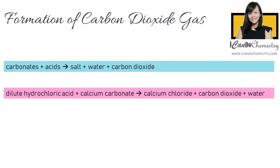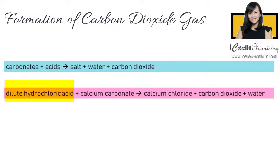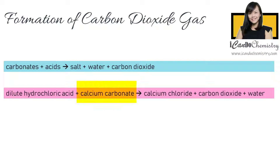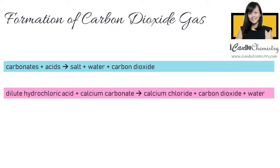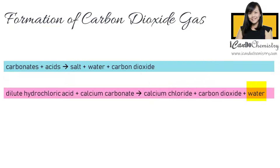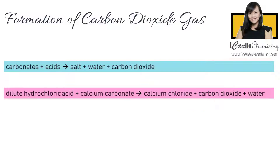For example, when dilute hydrochloric acid reacts with limestone, which is calcium carbonate, the salt — which is calcium chloride — water, and carbon dioxide gas is formed.